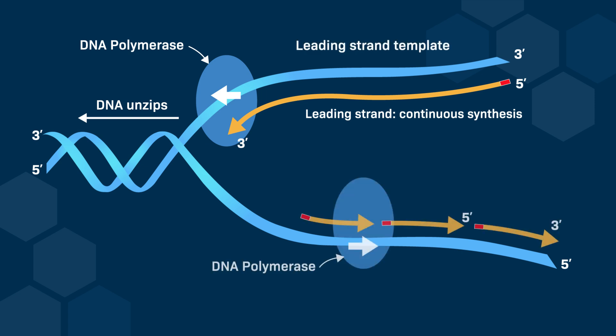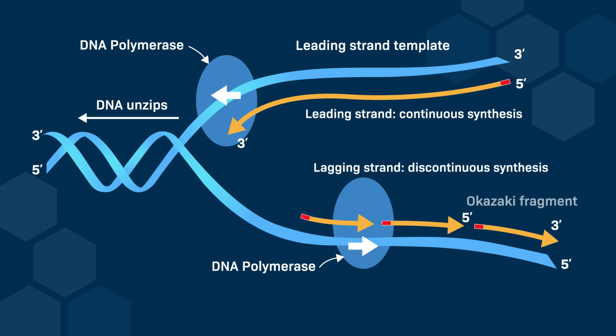On the other hand, the 5' to 3' template strand must be synthesized discontinuously because DNA polymerase must work in short sections away from the replication fork. This results in the formation of Okazaki fragments on what becomes the lagging strand, with each fragment initiated by its own RNA primer.